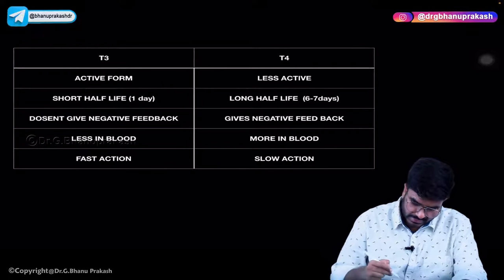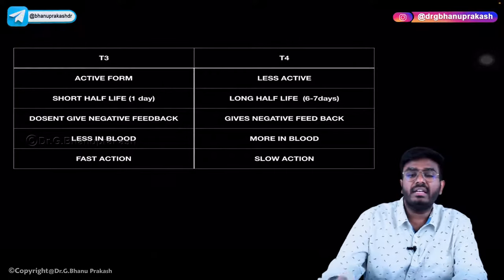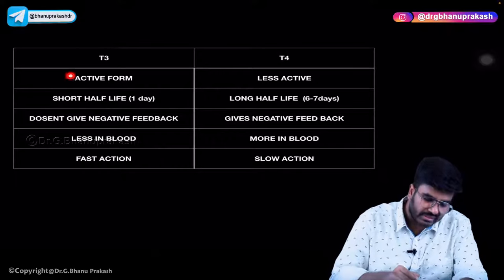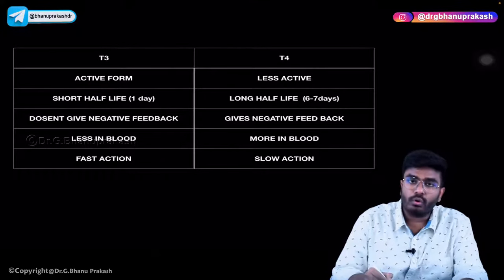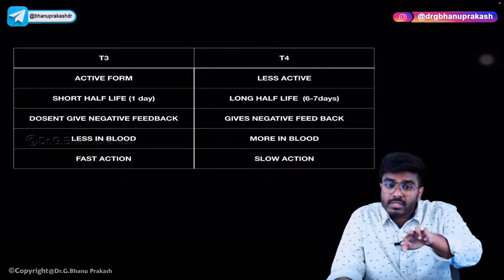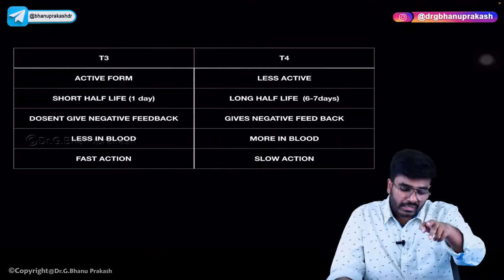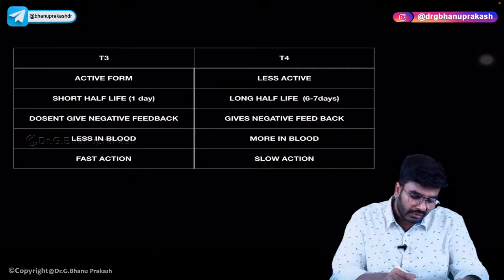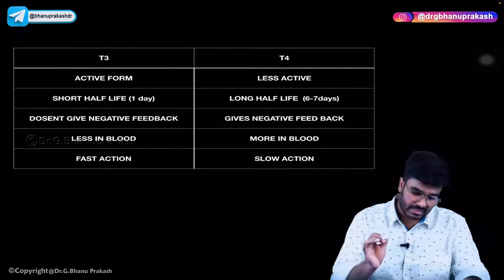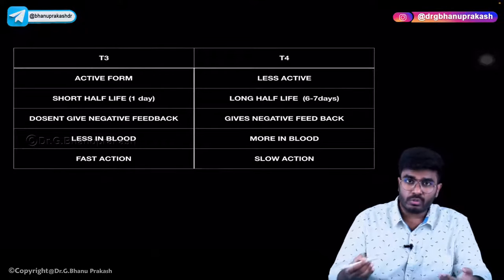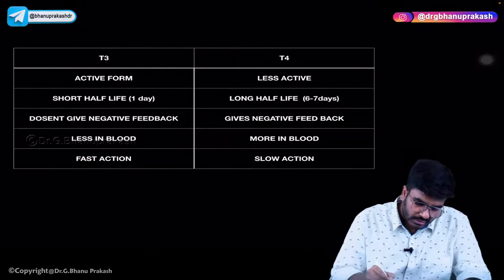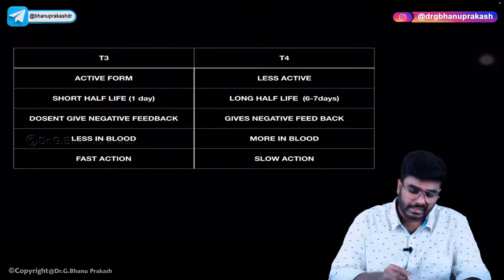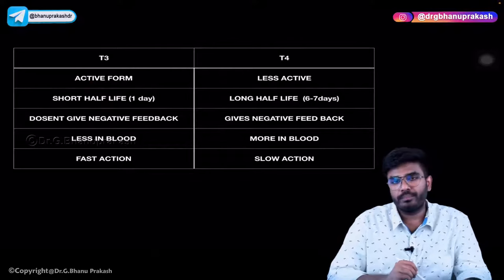Let's see the important differences between T3 and T4. Out of T3 and T4, who is really active? The active form is T3. T4 is the inactive form — T4 is converted into T3. T4 is less active and gets converted into T3, which is the active form.